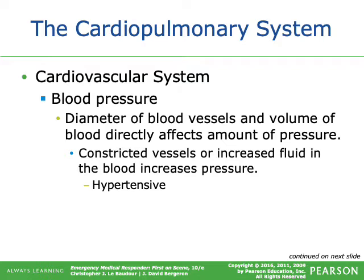Constricted blood vessels or increased fluid in the blood increases pressure. Constriction can come from chronic smoking, drugs, or genetics. Increased fluid is associated with congestive heart failure, putting stress on the heart and eventually causing fluid buildup and heart failure. Results of hypertension include stroke, heart attack, and kidney failure. Hypertension is often called a silent killer — many people don't realize their blood pressure is elevated, and uncontrolled hypertension can lead to dialysis.